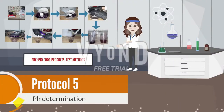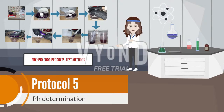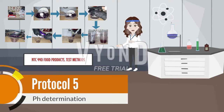Protocol five is pH determination, carried out with photographic evidence based on NTC 4040. This test is important as it measures the degree of acidity or basicity of a sample. In the case of jam, its pH is greater than or equal to 2, indicating it is acidic.